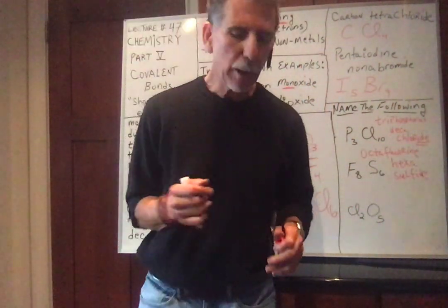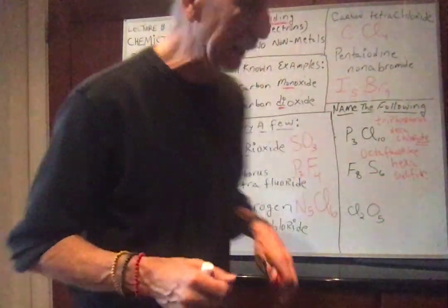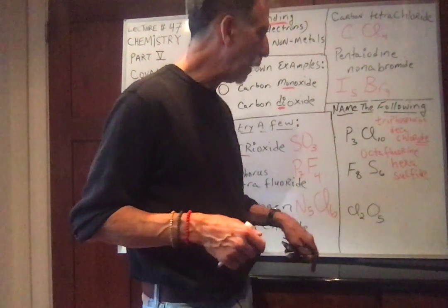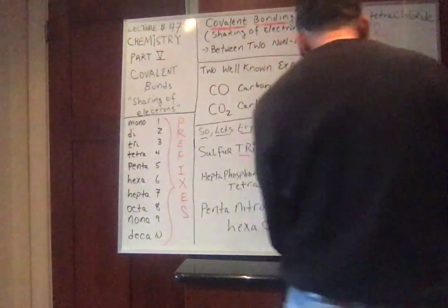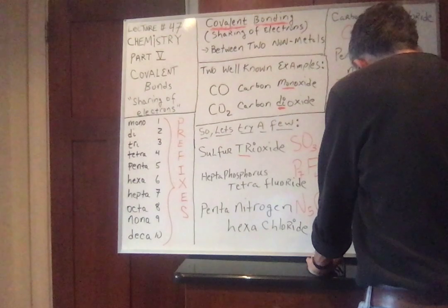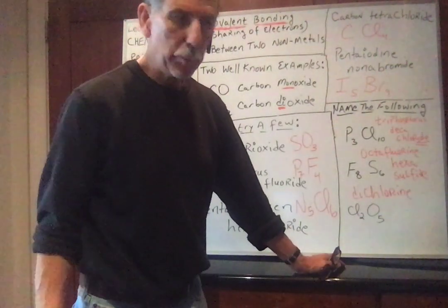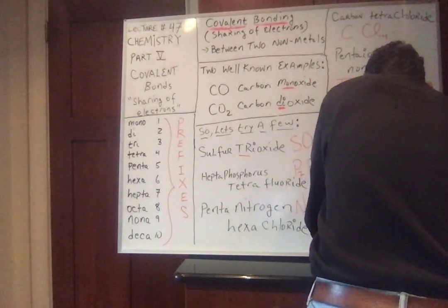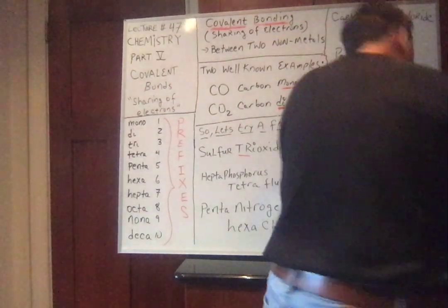Cl2O5: two chlorines, five oxygens. Two is di, so dichlorine. Five is penta, so pentaoxide. Dichlorine pentaoxide. That's pretty much what I want to say.